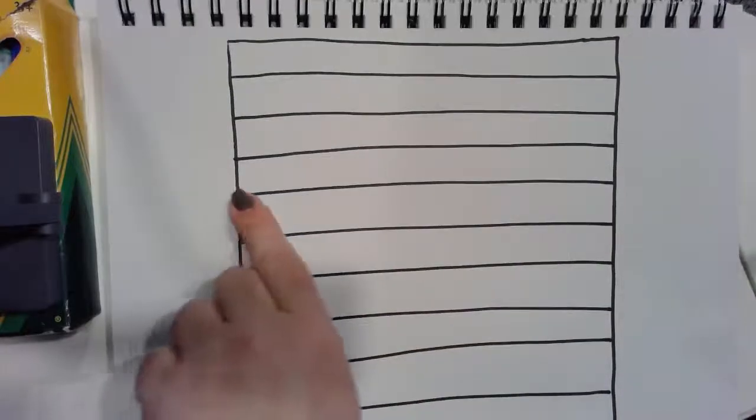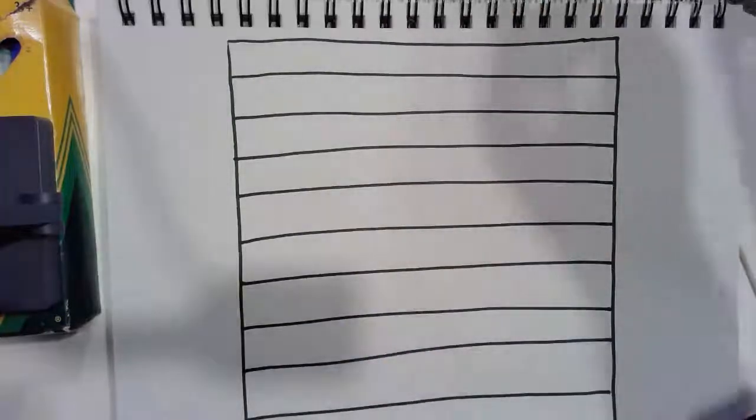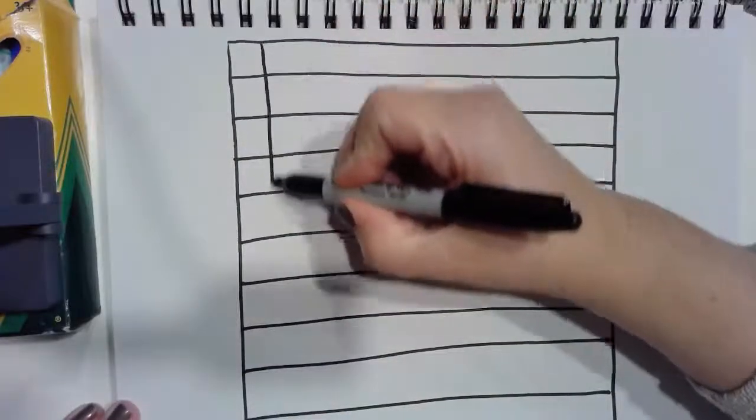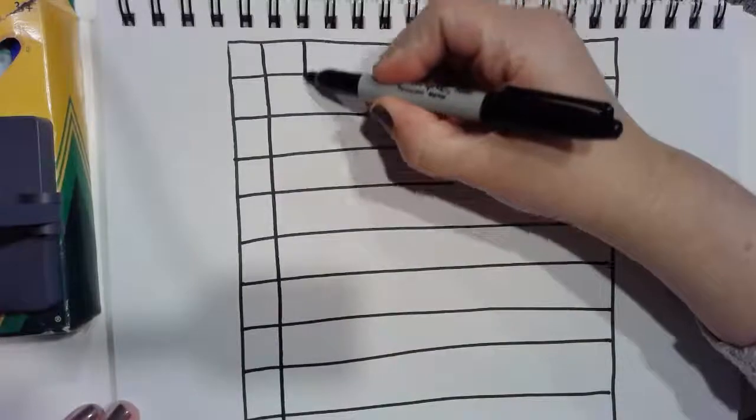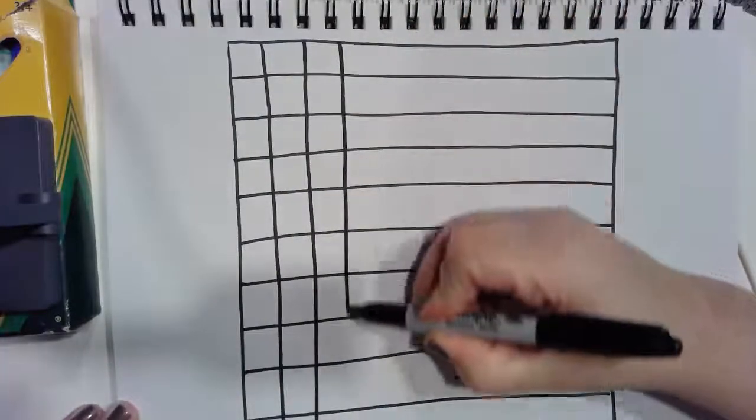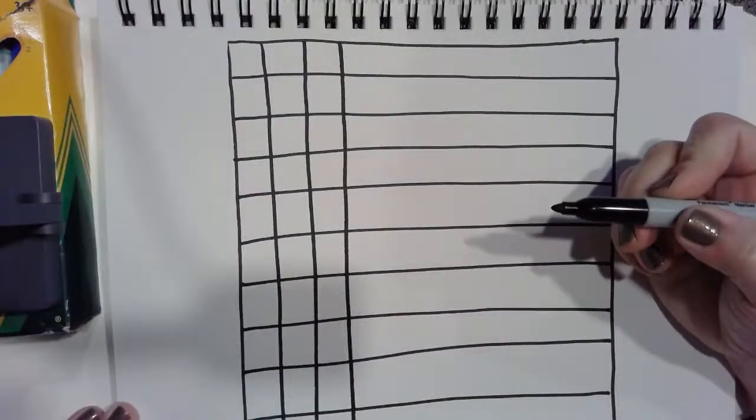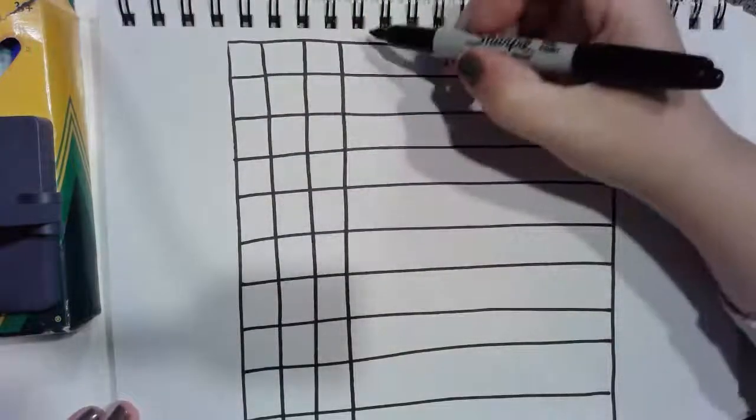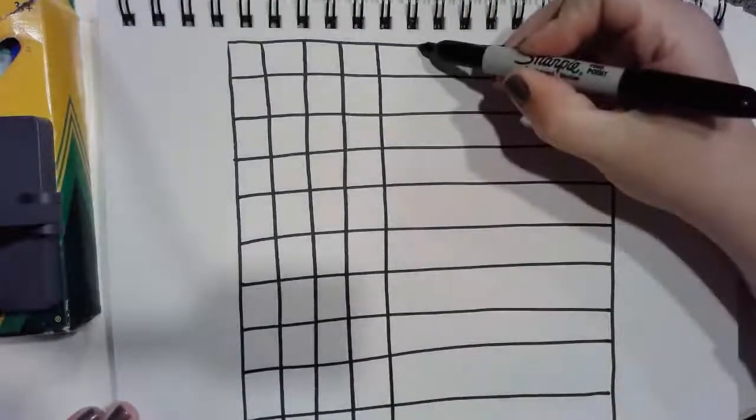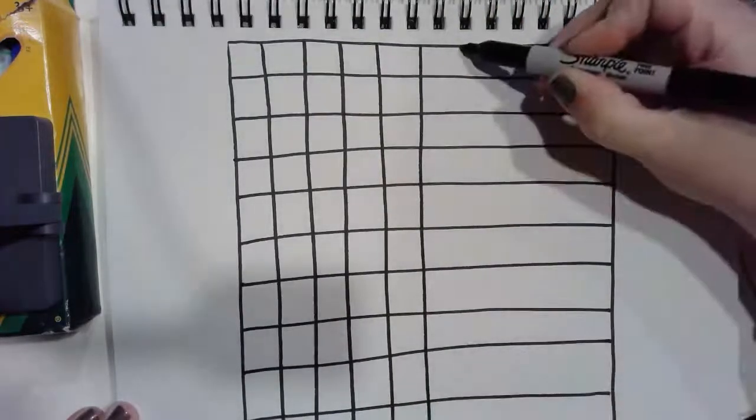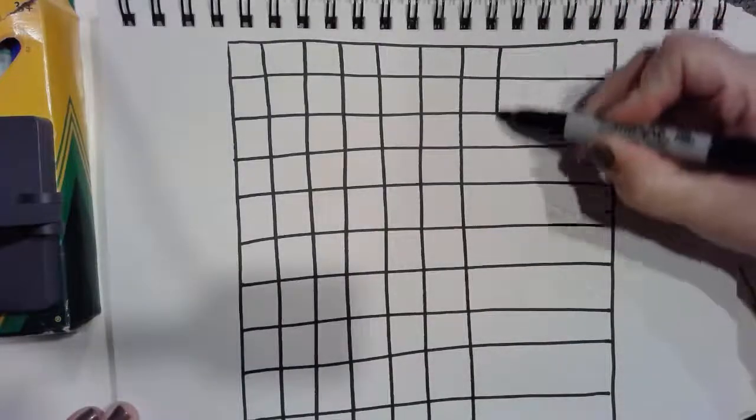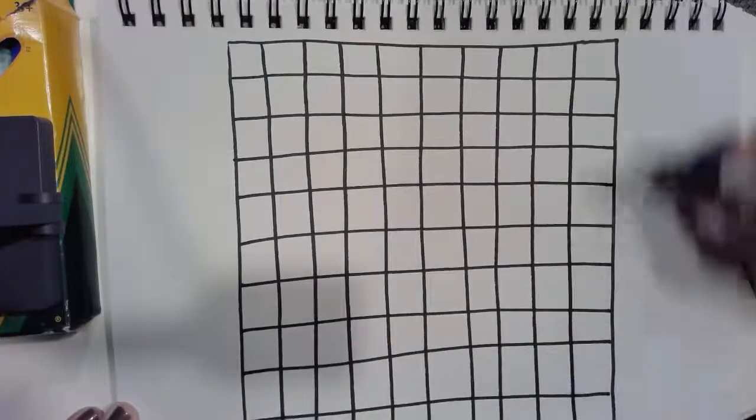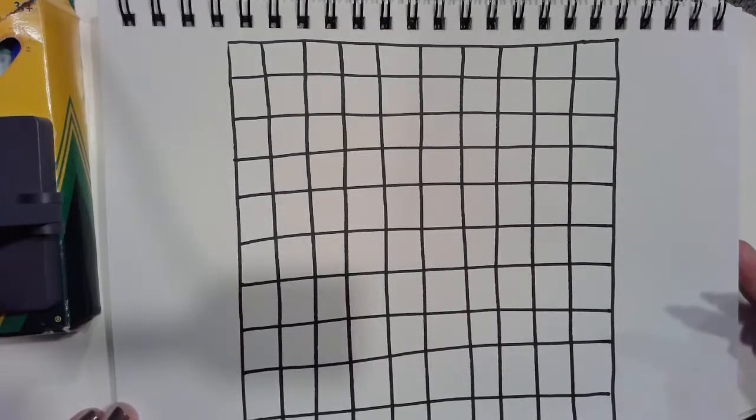Now we're going to do the same thing going across. So I'm going to go down this time and I'm going to make 10 lines again because this needs to be a group of 10. 1, 2, 3, 4, 5, 6, 7, 8, 9. And I don't have to draw my 10th line because I already did it when I drew the square at the beginning.